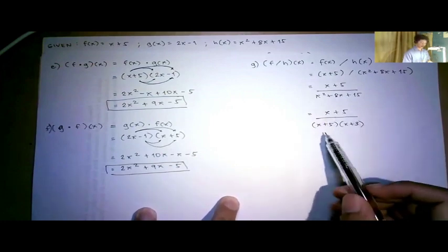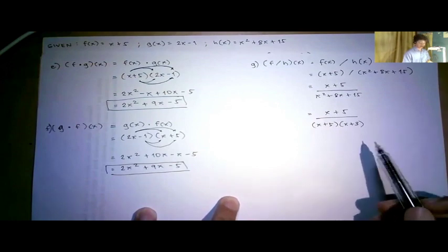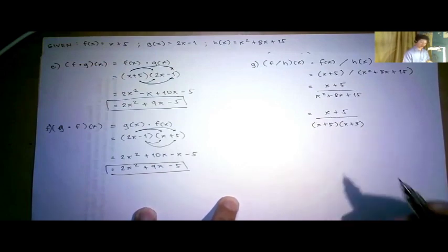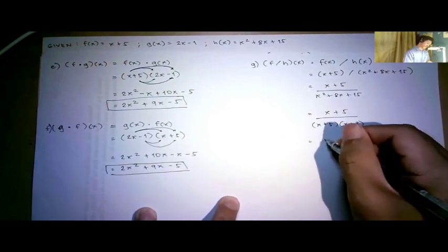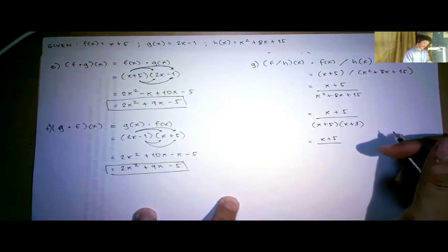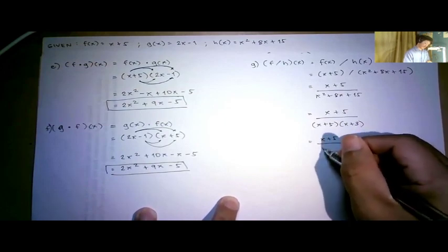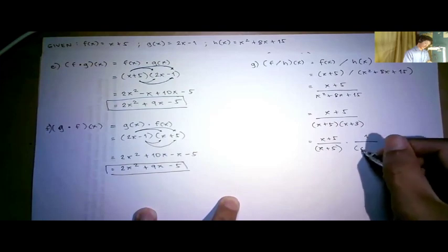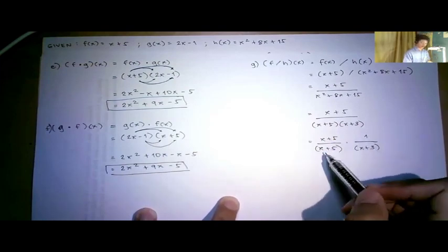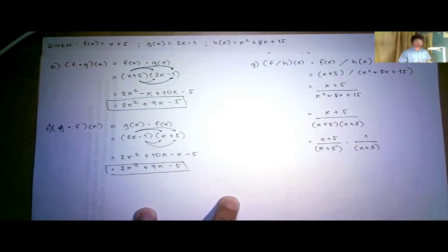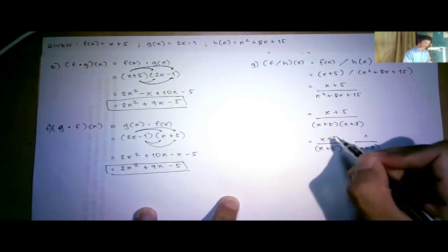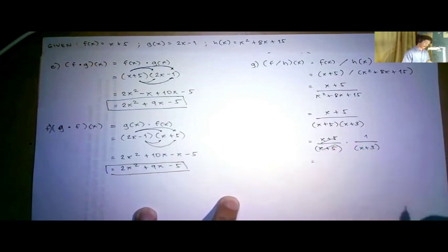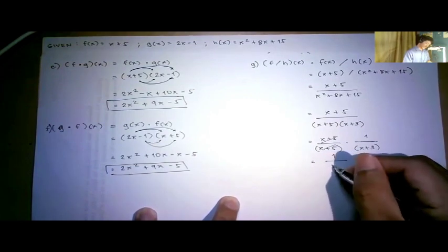So we have (x + 5) over (x + 5)(x + 3). Since we have the same terms x + 5 in numerator and denominator, we can cancel them out. x + 5 divided by x + 5 equals 1, just like 4÷4 or 2÷2. So 1 times 1/(x + 3) gives the final answer: 1/(x + 3).